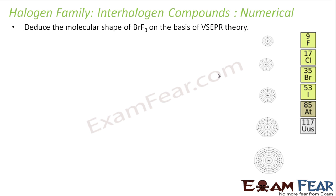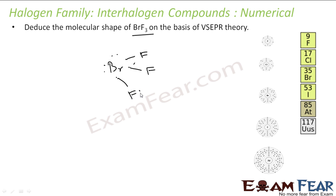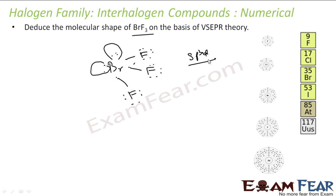Now let's deduce the structure of BrF₃ based on VSEPR theory. Bromine has 7 valence electrons. With three fluorines attached, bromine will have 2 lone pairs. So based on VSEPR, we count 1+2+3 = 5 electron pairs: SP3D hybridization. We have 3 bond pairs and 2 lone pairs — those are the Br–F bonds.